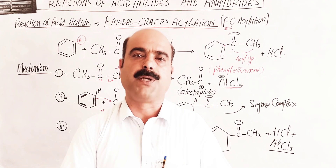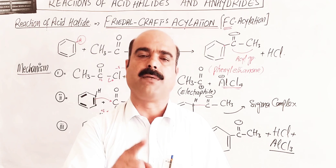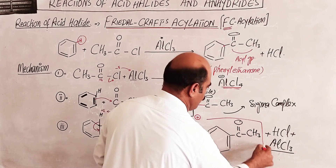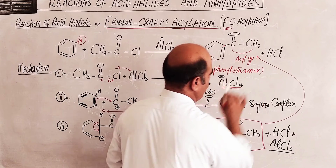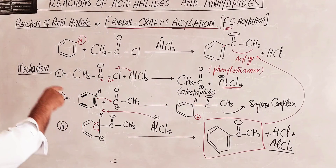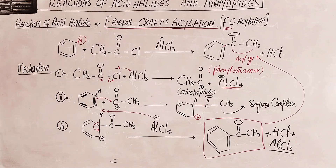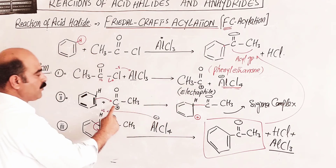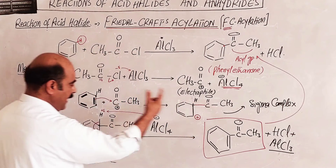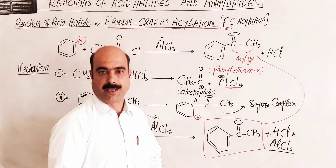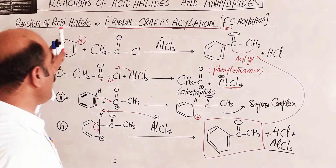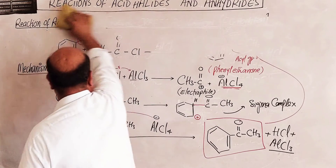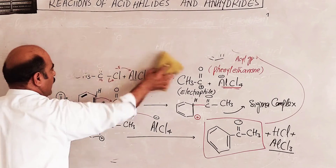The catalyst AlCl3 is recovered unchanged in mass and composition at the end of the reaction — this chemical substance is known as a catalyst. To summarize Friedel-Crafts acylation: the general mechanism involves formation of electrophile, electrophilic attack on benzene ring with formation of sigma complex, then proton transfer and formation of the final stable aromatic ketone product.